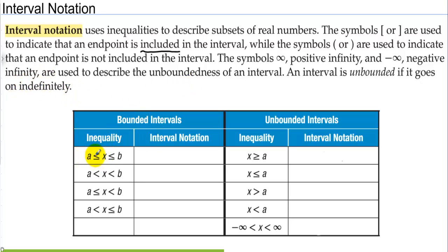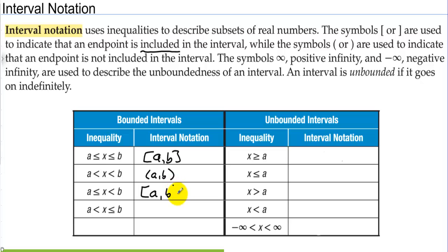Here we have x's between a and b and we include a and b, so in interval notation that's a comma b with brackets. In the next one we have a comma b with parentheses. Here we want to include a so we put a bracket; we don't want to include b so we put a parenthesis. And then we reverse that with this one — parenthesis first and then the bracket.